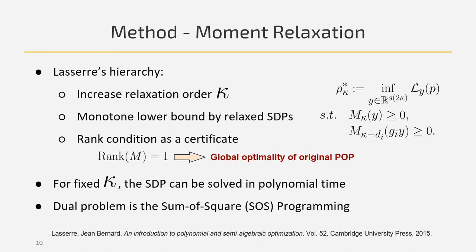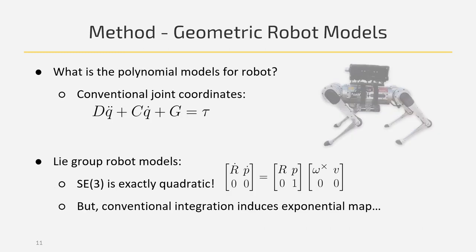For a fixed relaxation order, the SDPs can be solved in polynomial time, which is quite efficient. Now the question is: how do we formulate the robot dynamics as polynomials?